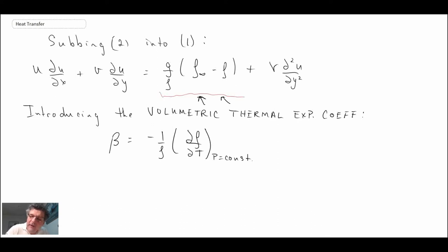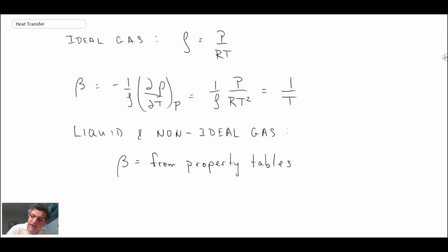So that would be beta expressed in terms of a finite difference. Now I'm going to solve for rho_infinity minus rho, which is what is in our momentum equation.